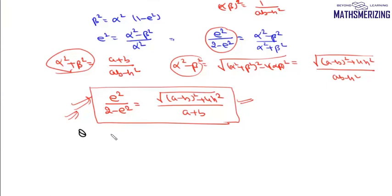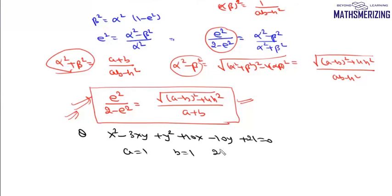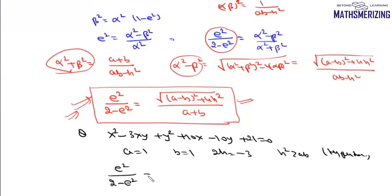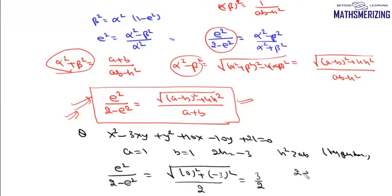For example, suppose the equation is x² - 3xy + y² + 10x - 10y + 21 = 0. Here a = 1, b = 1, and 2h = -3, and h² > ab, so this equation represents a hyperbola. We write e²/(2 - e²) = √[(a - b)² + 4h²] / (a + b). Here (a - b)² = 0 and 4h² = 9 (since 2h = -3), and a + b = 2, so this equals 3/2. Solving, 2e² = 6 - 3e², giving e² = 6/5, so e = √(6/5).